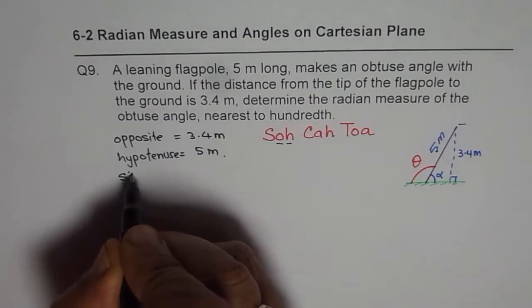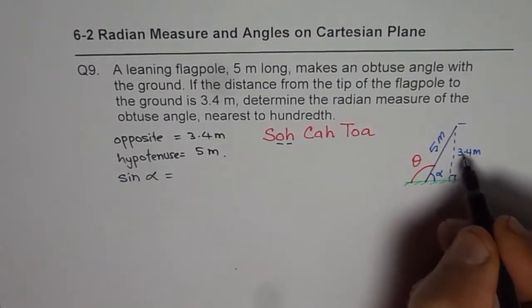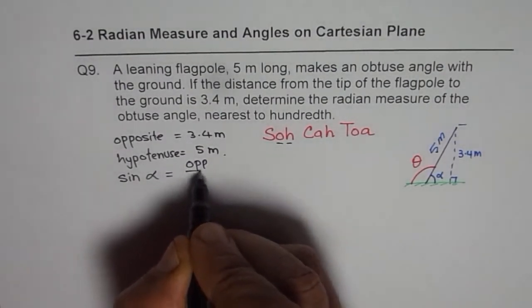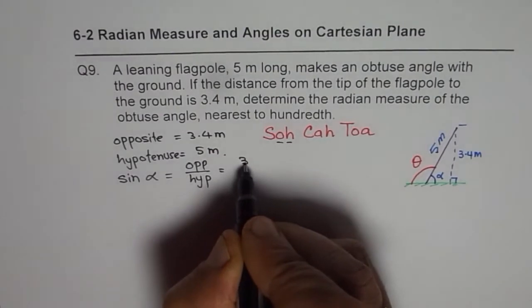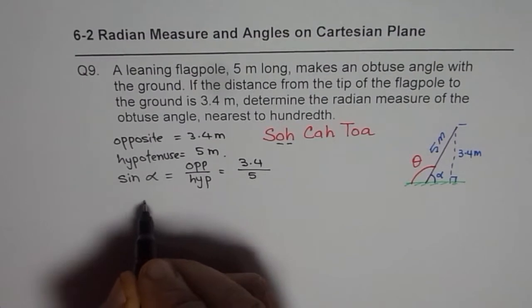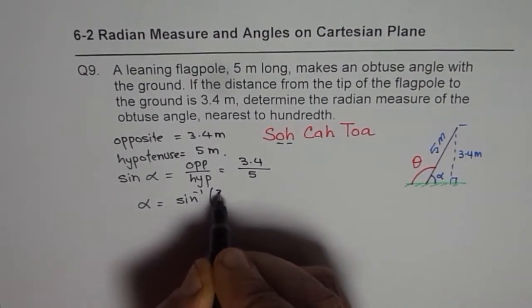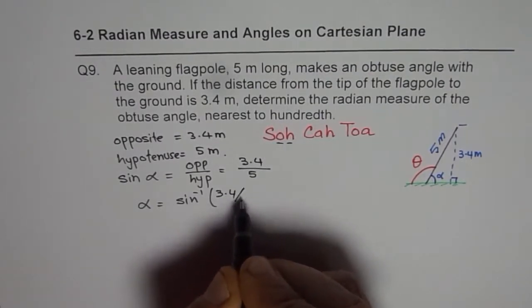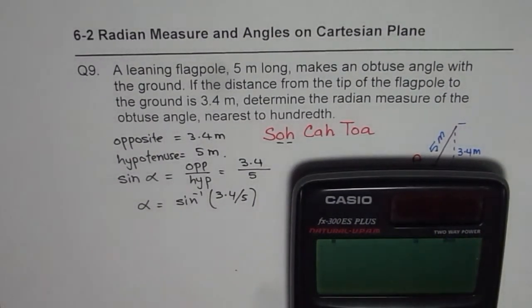So sine of alpha should be equal to opposite over hypotenuse, which is 3.4 divided by 5. From here we can say alpha equals sine inverse of 3.4 divided by 5. So we can use the calculator at this stage. Find the angle. Remember the setting of the calculator should be radians.